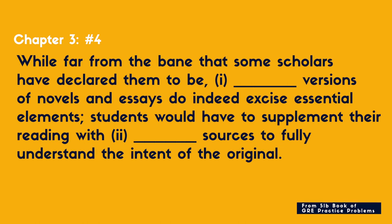Let's look at this in practice now that we have our four strategies in place. Take a look at your Manhattan Prep five pound book of GRE problems and look at number four. 'While far from the bane that some scholars have declared them to be, [blank] versions of novels and essays do indeed excise essential elements. Students would have to supplement their reading with [blank] sources to fully understand the intent of the original.' Now that I've actually read the sentence, I have a sense of the context. So the next thing I'm going to do is think about what words around the blanks give me some clues about what this is supposed to be about.